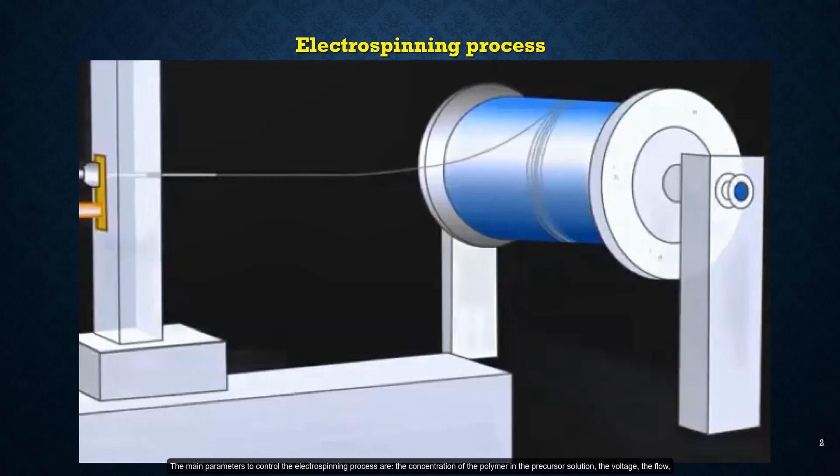The main parameters to control the electrospinning process are the concentration of the polymer in the precursor solution, the voltage, the flow, the distance from the collector, and something very important is to control the relative humidity. The main advantages of this technique are the easy configuration of the equipment, high speed of fiber production, low cost of the process, high versatility that allows control of the fiber diameter and microstructure in a wide range of materials.